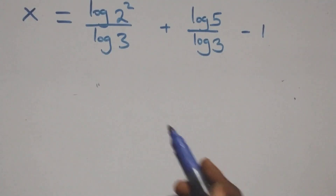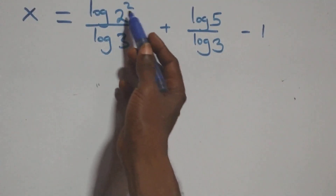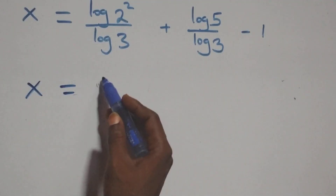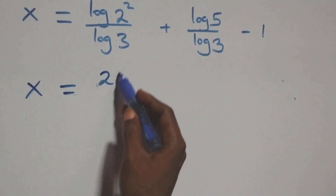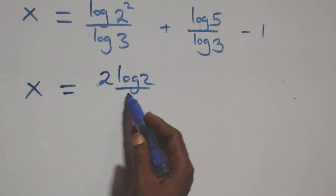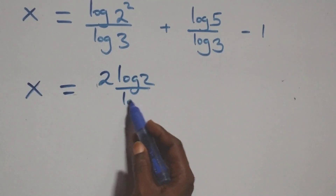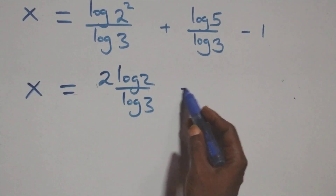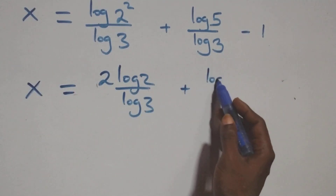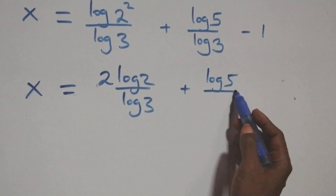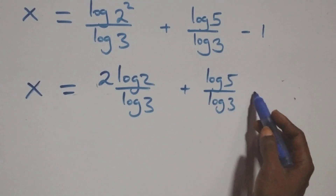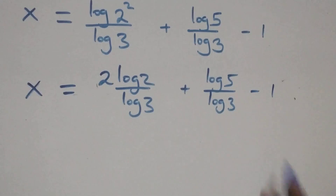Since 4 equals 2 squared, log 4 equals 2 log 2. So x equals to 2 log 2 over log 3 plus log 5 over log 3 minus 1.